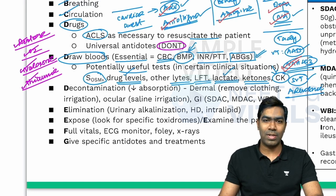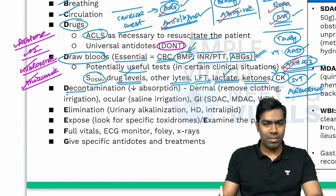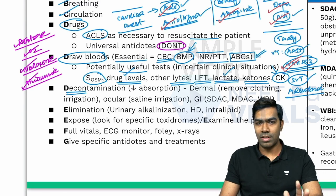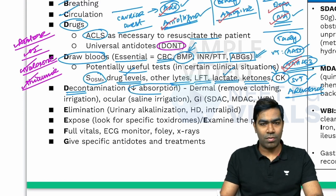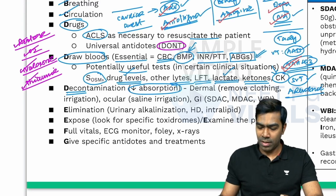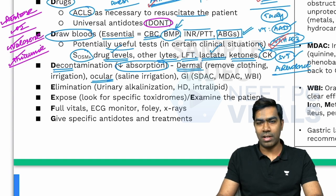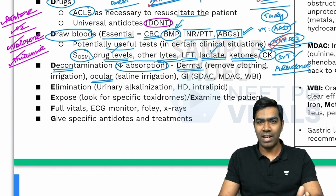The third D stands for decontamination — very important in emergency medicine. You perform decontamination to reduce the absorption of toxins from the skin, eyes, or GI tract. GI decontamination is performed most regularly, but you can also consider dermal decontamination and ocular decontamination. Dermal decontamination means removing the patient's clothing and giving saline or distilled water irrigation.